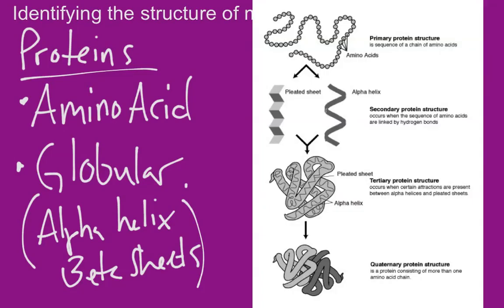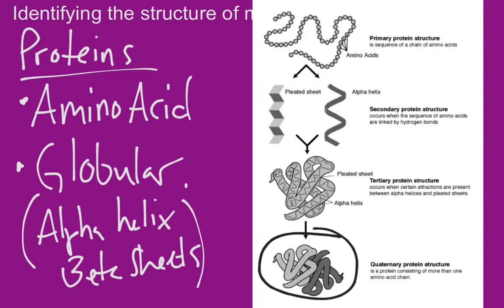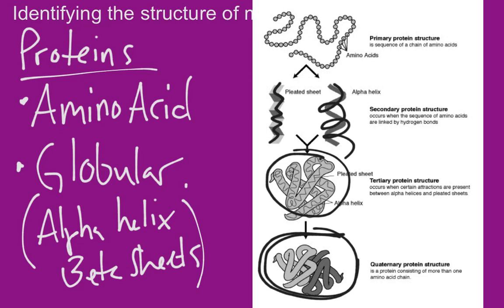We can also look for the shape of the protein itself. Sometimes we're given a whole protein, which usually looks like a glob or blob. Proteins are made up of a string of amino acids — the primary structure — which folds into secondary structures like beta sheets and alpha helices, then comes together to form the tertiary structure, and usually several tertiary proteins combine to make the quaternary structure. So something shaped like a glob is usually a protein.